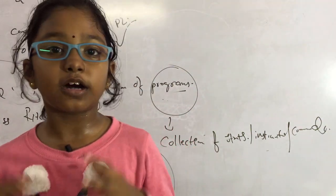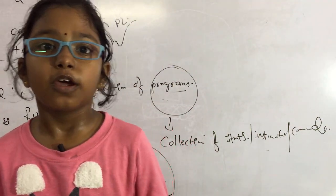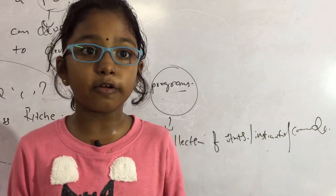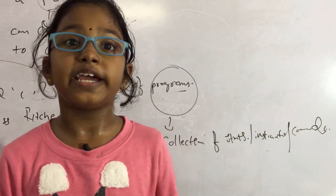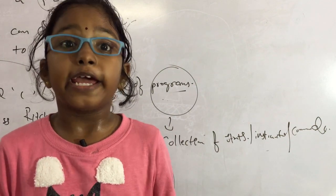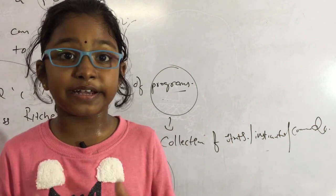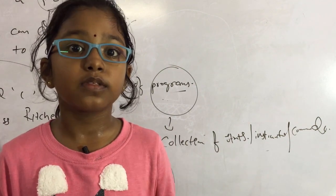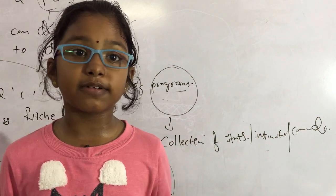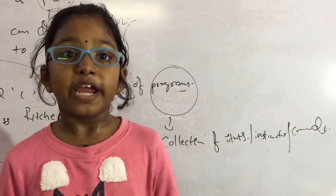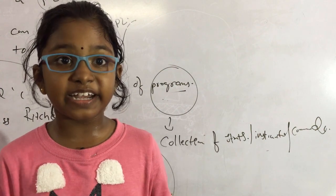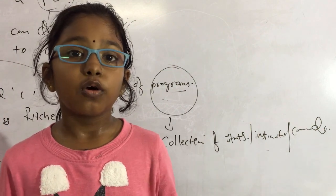History of C — who invented C, do you all know? Dennis Ritchie invented C in 1972. Do you know where it was invented? It was invented at AT&T Bell Labs.